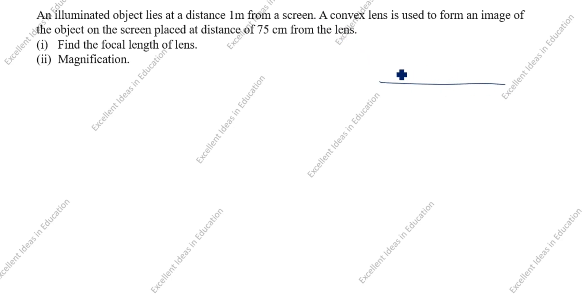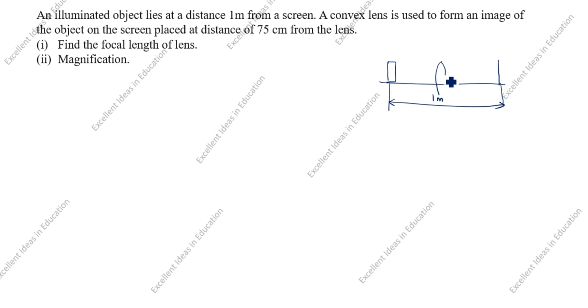Hi friends, welcome to my channel Excellent Ideas in Education. Today we are going to solve this slide chapter problem. An illuminated object lies at a distance of one meter from a screen. A convex lens is used to form an image of the object on the screen, placed at a distance of 75 centimeters from the lens.